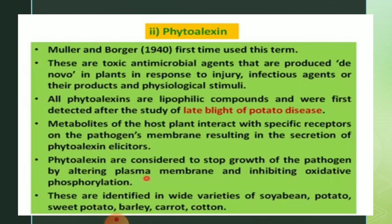The term phytoalexin comes from 'phyto' meaning plant and 'alexin' meaning protecting substance. Metabolites of the host plant interact with specific receptors on the pathogen's membrane resulting in the secretion of phytoalexin elicitors. Phytoalexins are considered to stop growth of the pathogen by altering the plasma membrane and inhibiting oxidative phosphorylation.